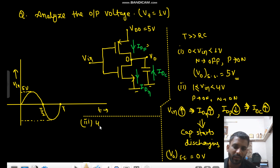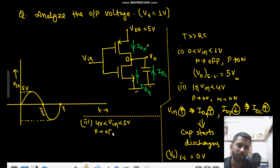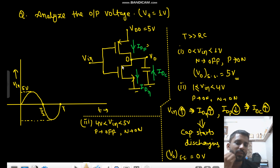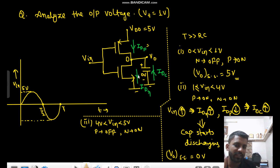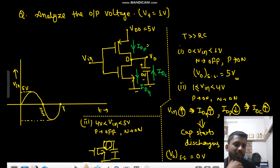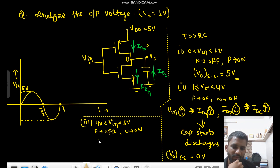Third condition: when Vin is greater than 4V and less than 5V — say 4.1V — PMOS will be off and NMOS will be on. Now Vnot is already at 0V. Since PMOS is off and NMOS is on with no supply on the NMOS side, 0V will remain at 0V. So Vnot remains at 0V.